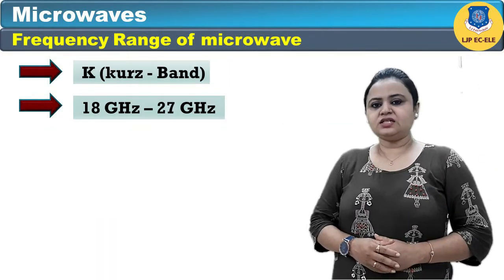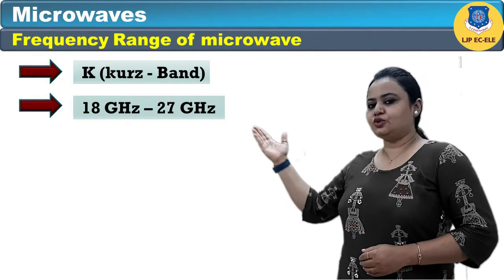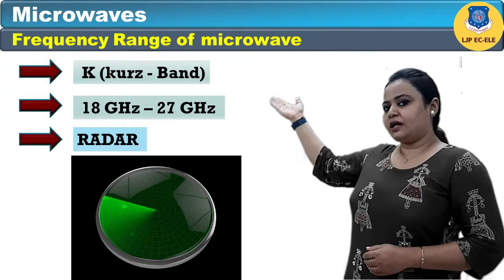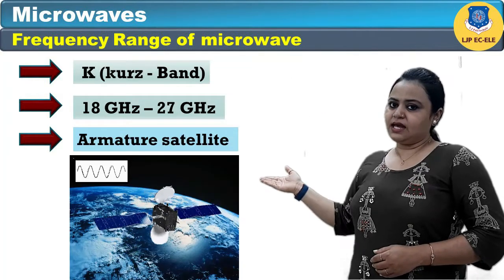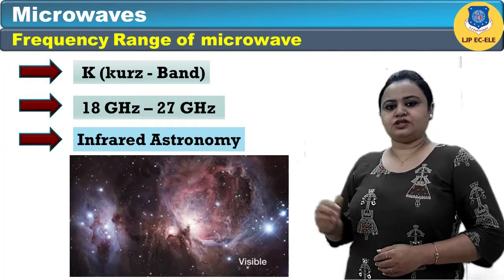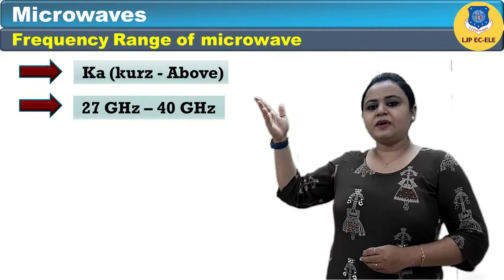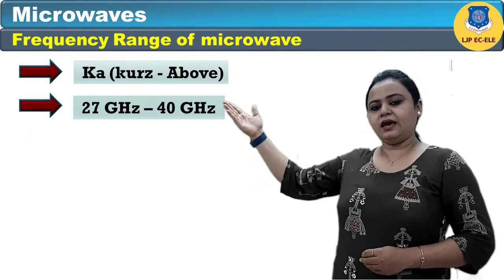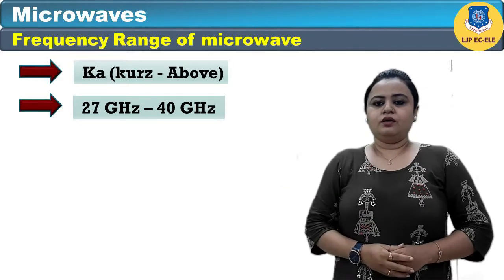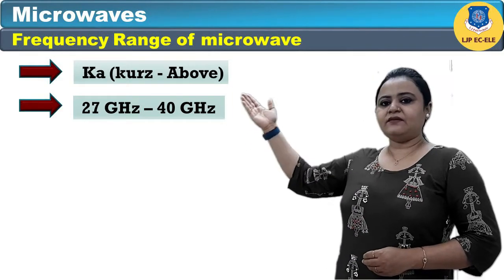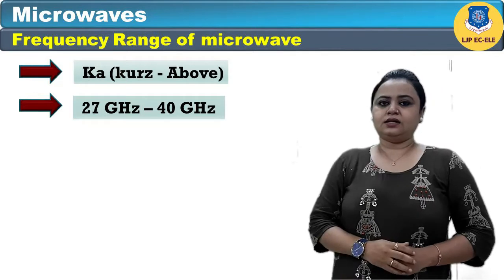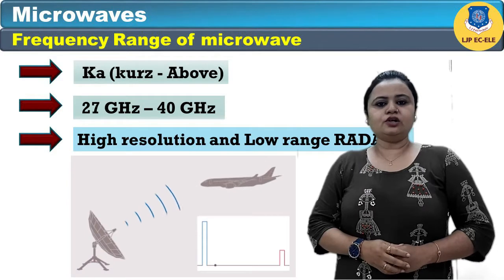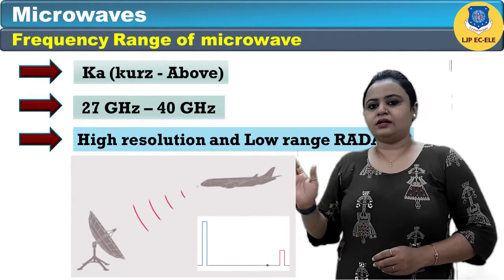The K band ranges from 18 GHz to 27 GHz and is useful for radar, amateur satellites, and infrared astronomy. The Ka band ranges from 27 GHz to 40 GHz and is also useful in satellite communication, high resolution, and low range radar.